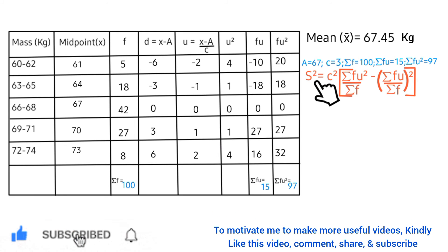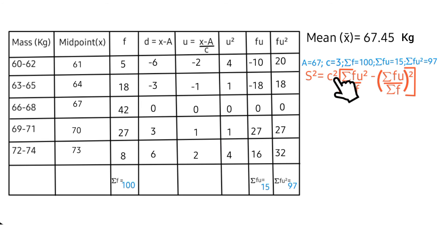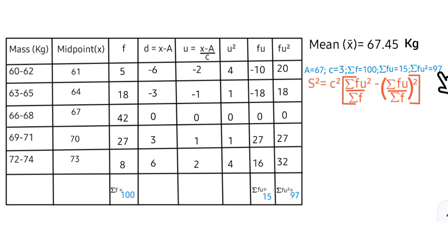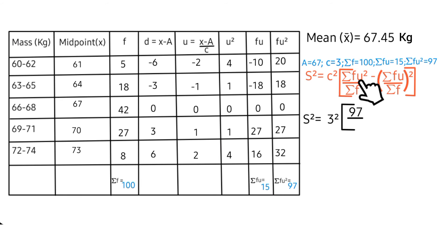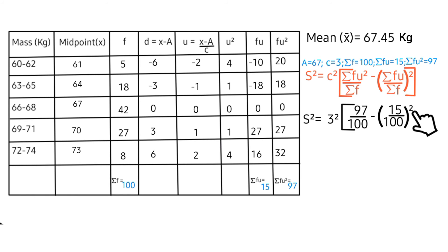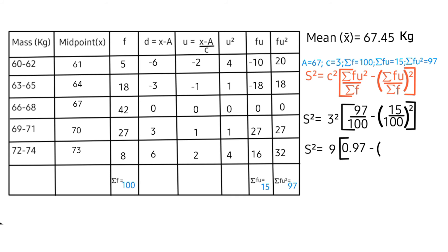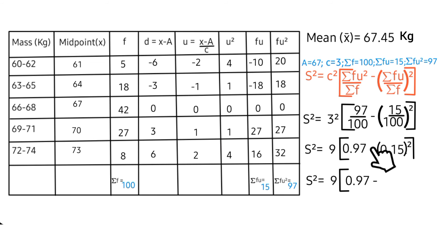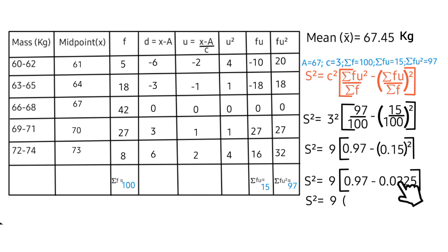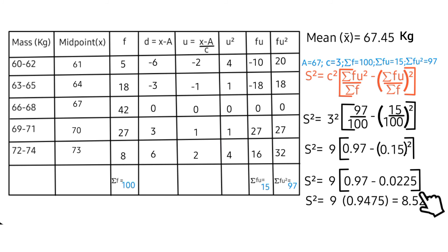Now let's calculate the variance. Variance is represented as s² and the formula is: s² = c² × [(summation fu²/ summation f) − (summation fu / summation f)²]. With c = 3, c² = 9. We get 9 × (97/100 − (15/100)²) = 9 × (0.97 − 0.0225) = 9 × 0.9475 = 8.5275.